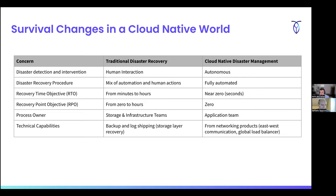Something worth adding: 70% of disasters are either caused or exacerbated by human interaction. One person doing one thing in the wrong order can turn a failover from a couple of minutes to a couple of hours or days. Someone fat-fingers a command, someone deletes the wrong file — it's not always intentional, but people are the most fragile element in disaster recovery. The more you can remove human involvement, the less likely you are to have a disaster.